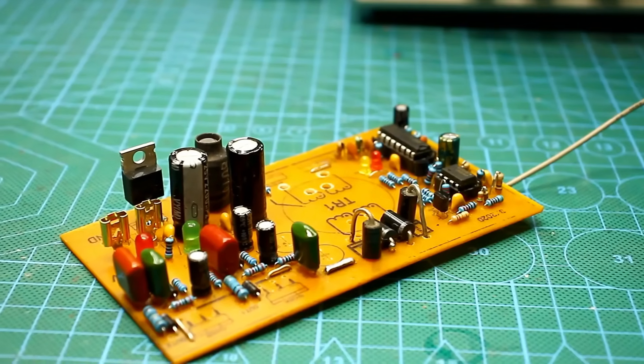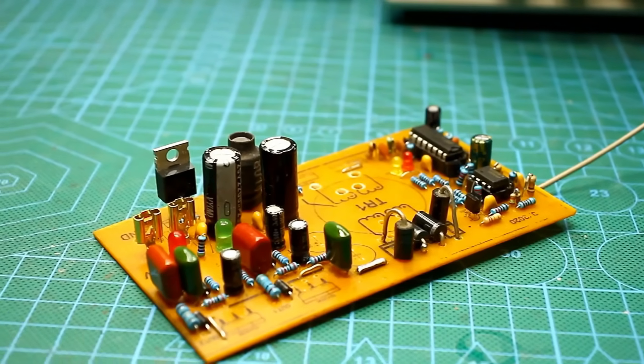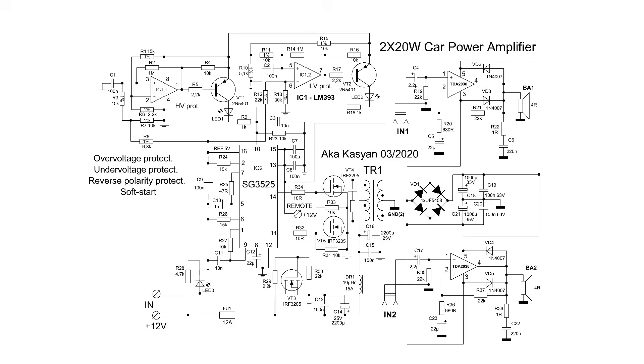The entire circuit is assembled on a single small printed circuit board. It consists of four units: the input section with a power filter, fuse, and a protection unit against reverse polarity; inverter; over-voltage and under-voltage protection system; and the power amplifier.